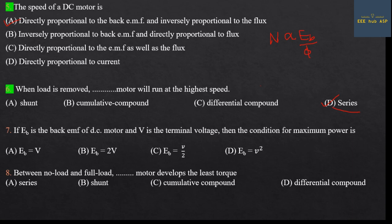Sixth question: If Eb is the back EMF of a DC motor and V is the terminal voltage, the condition for maximum power is: back EMF Eb equals V divided by 2. Answer: Eb = V/2.